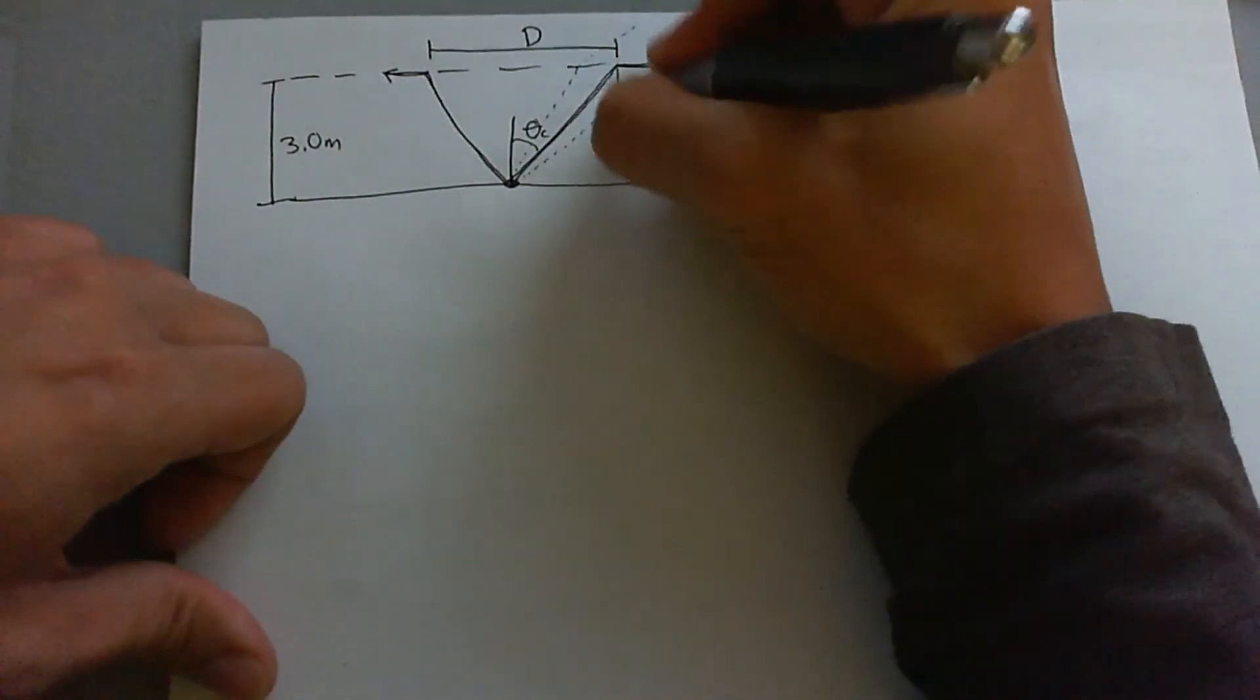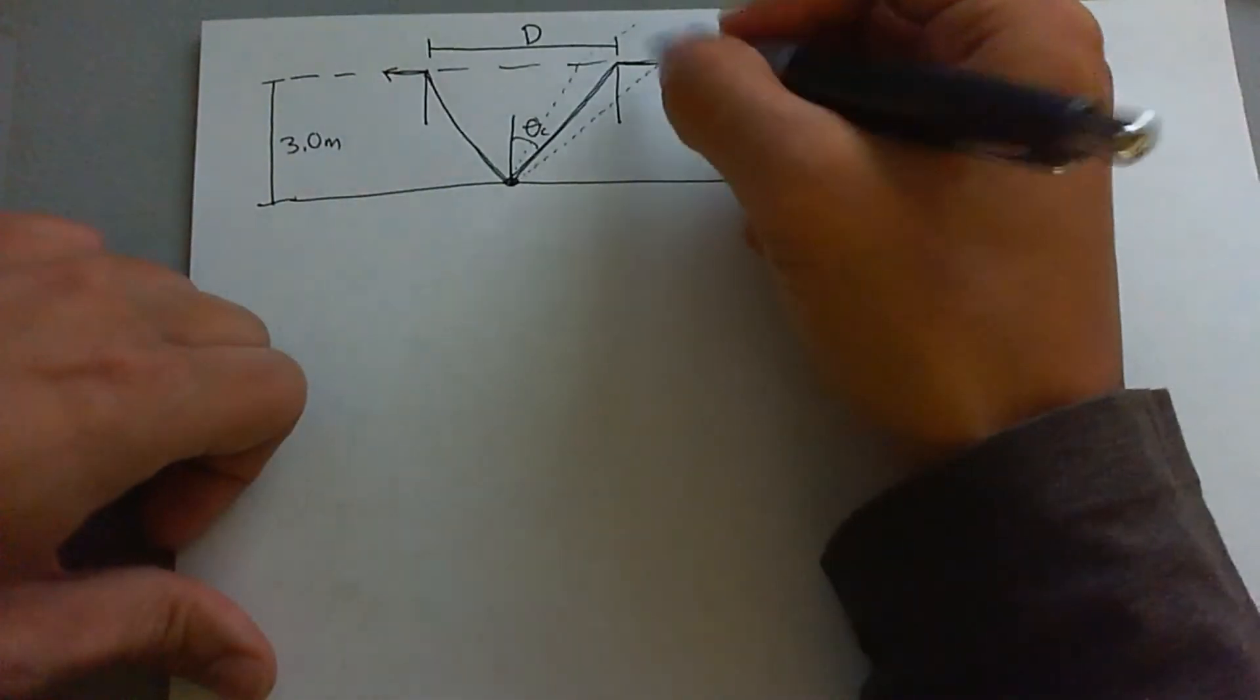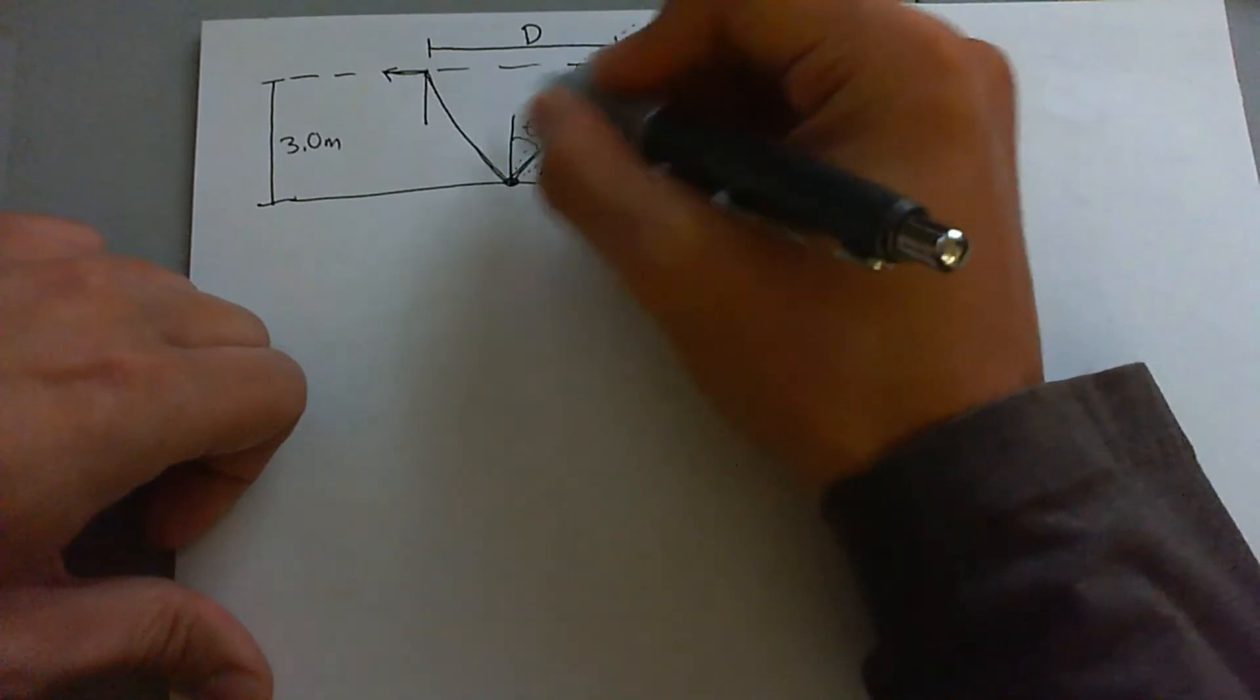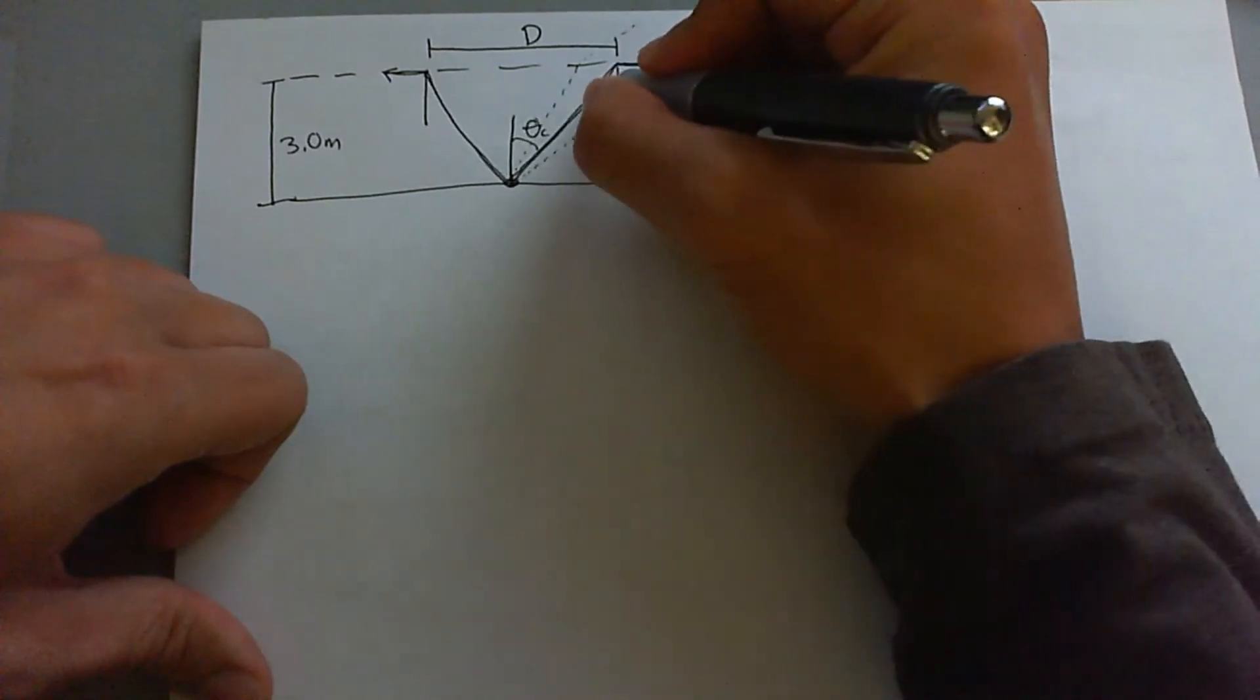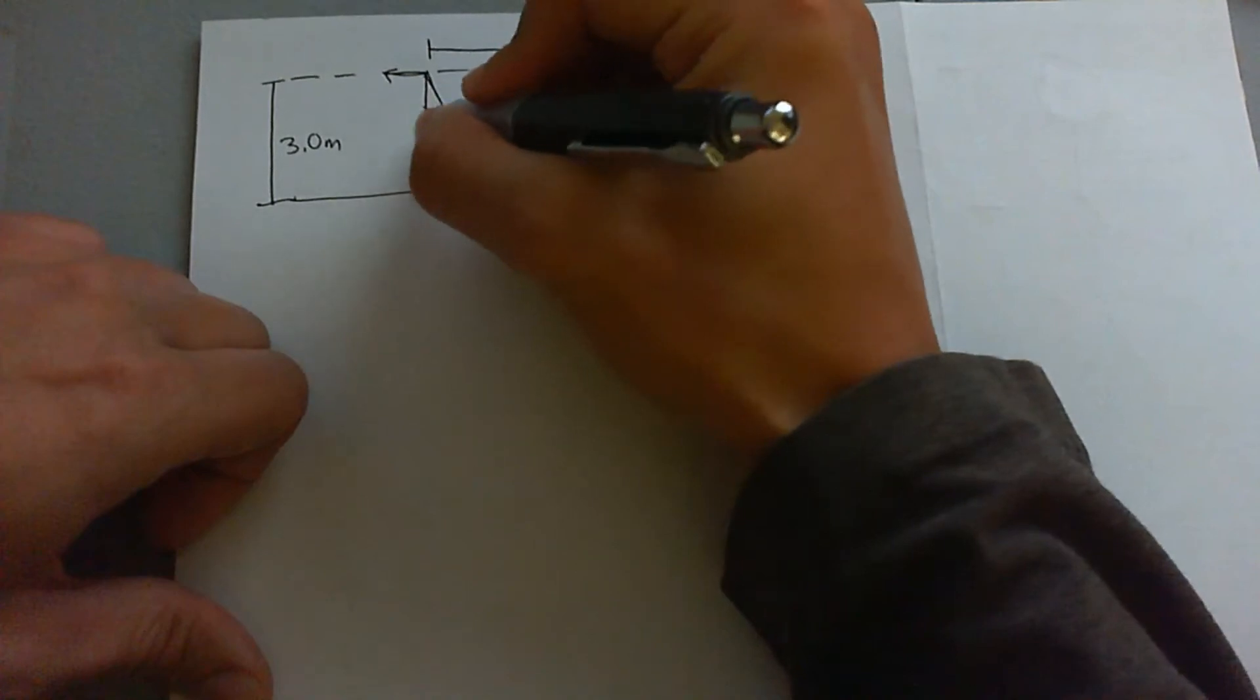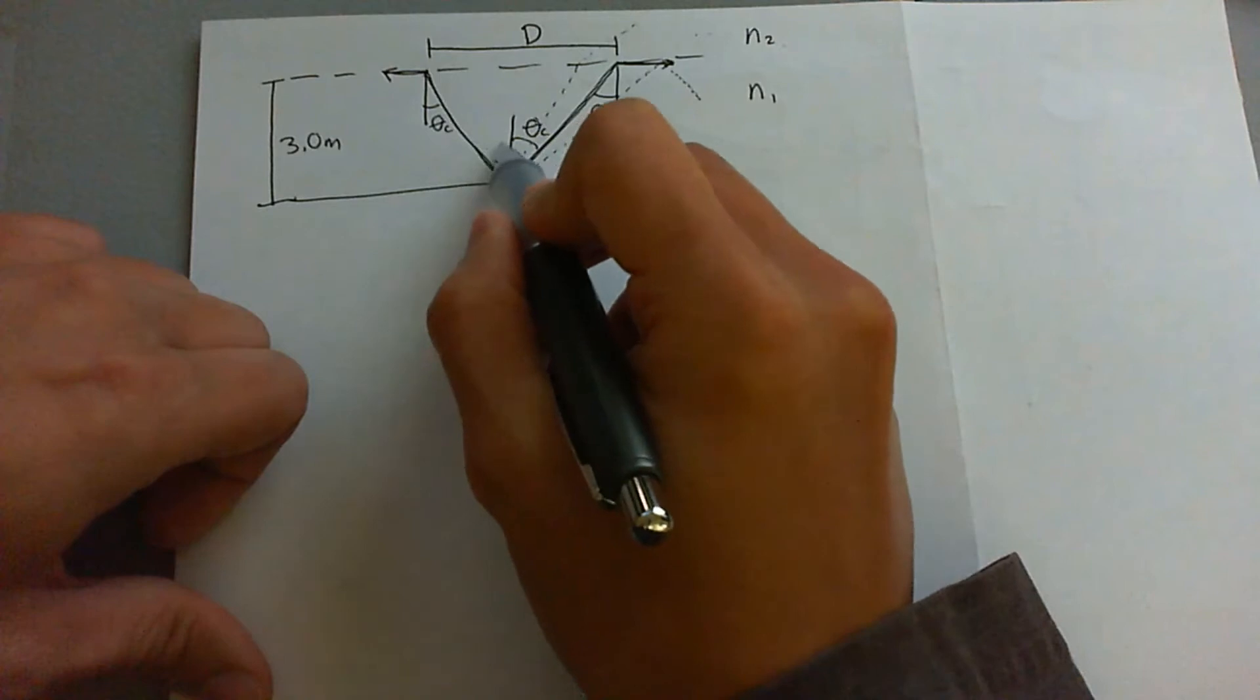If we look at the angles that interact with the border of the water and the air, you'll see through interior angles that the critical angle is going to be the same here as it is here. And again, for parallel borders, you're going to have the critical angle here, which is the same as the critical angle on this side.